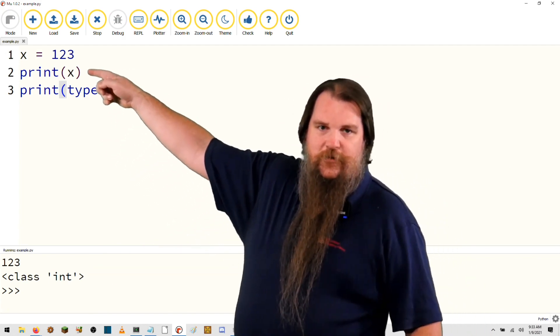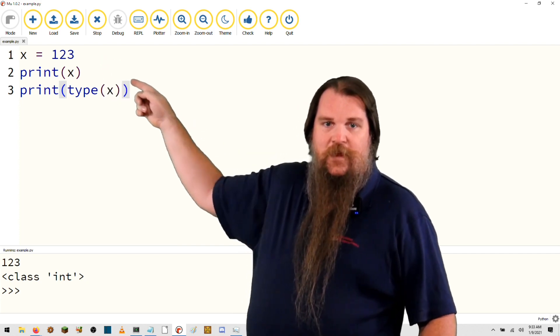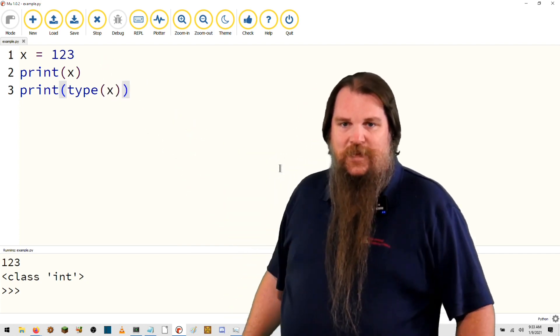And so what's going on here is that we know that we've got a variable x whose value is 123 and whose type is an integer.